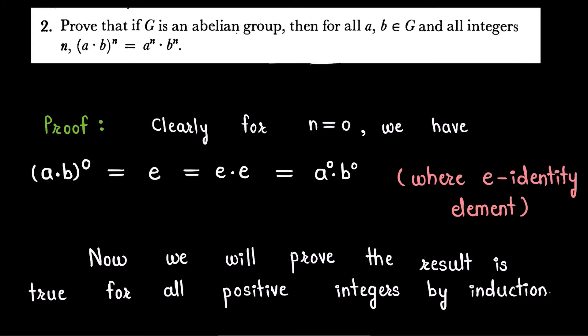Hello friends. In this video I am going to solve an exercise question from chapter number 2 from the book Topics in Algebra. The question is: prove that if G is an abelian group, then for all a, b in G and all integers n, (a·b)^n = a^n · b^n.